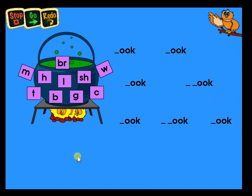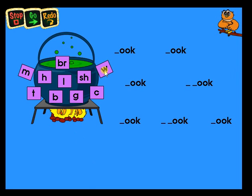Click on the letters shown on the cards, and then click to where it belongs to make an OOK word. Dinosaur. Type the word.